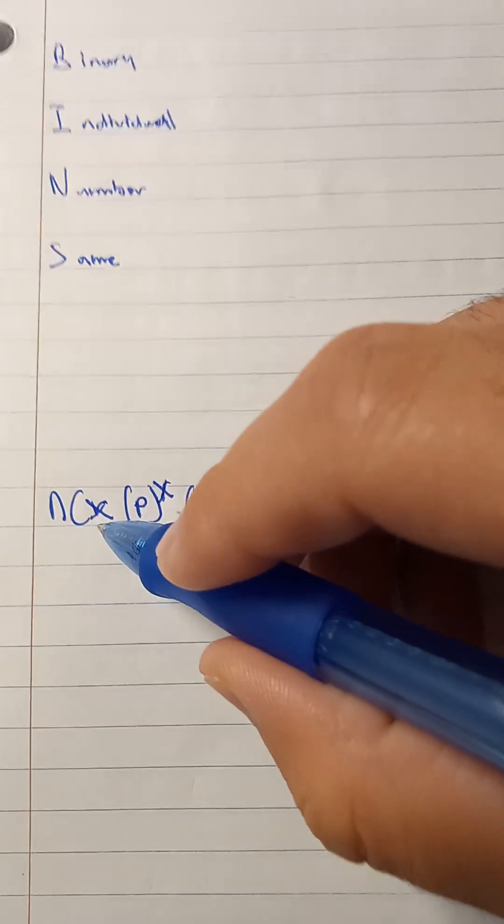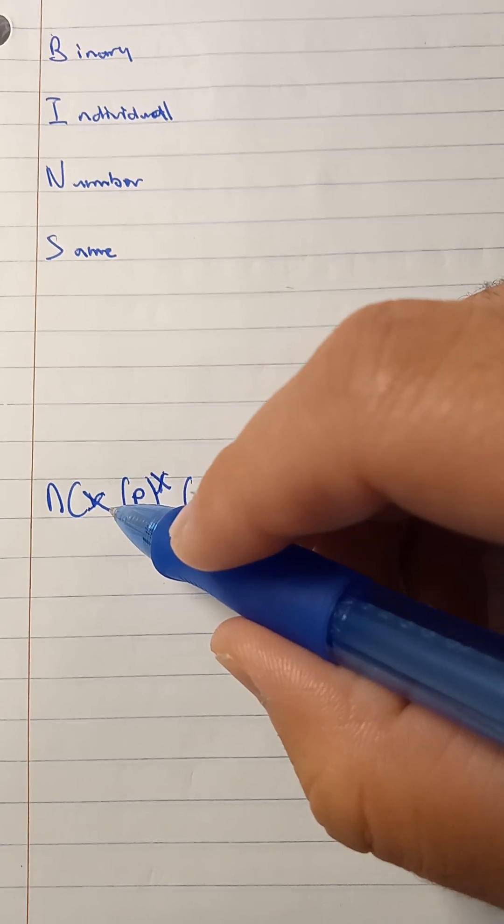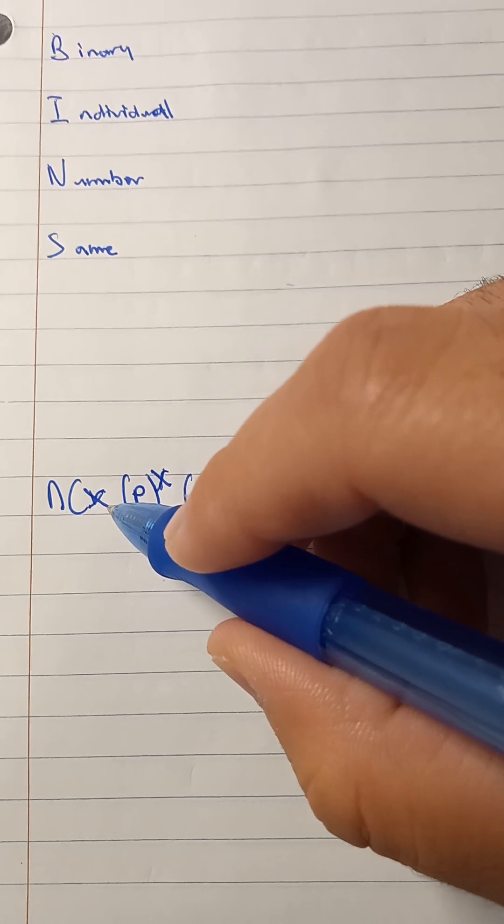N is the number of trials. C is choose. X is the number of trials you want to find of those n trials.